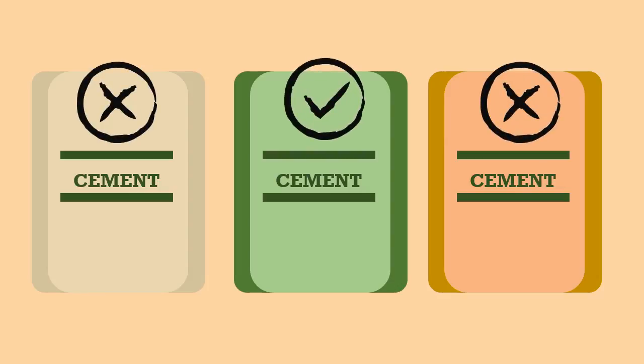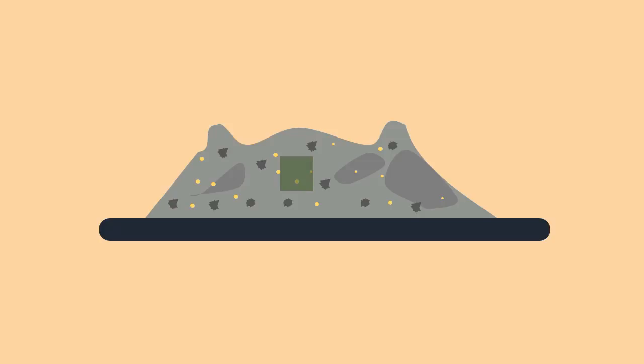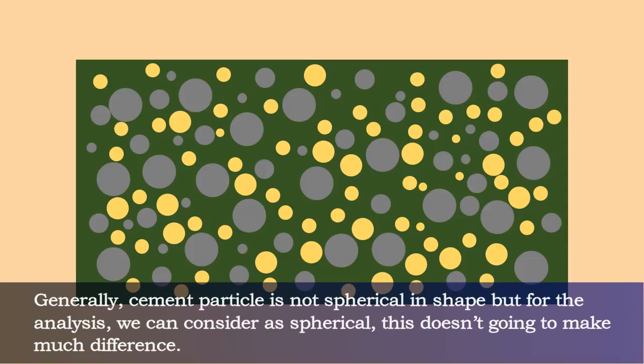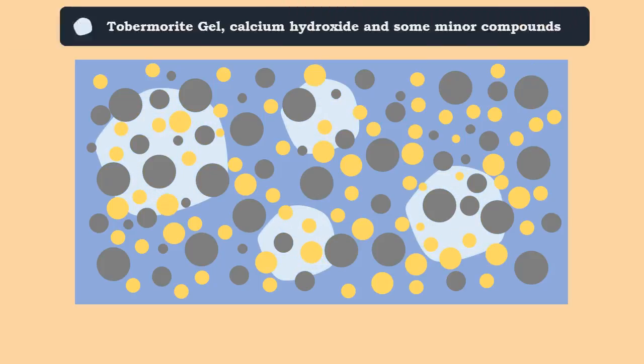Let us have a microscopic analysis of the hydration process. Generally, cement particles are not spherical in shape, but for this analysis we can consider them as spherical. This doesn't make much difference.